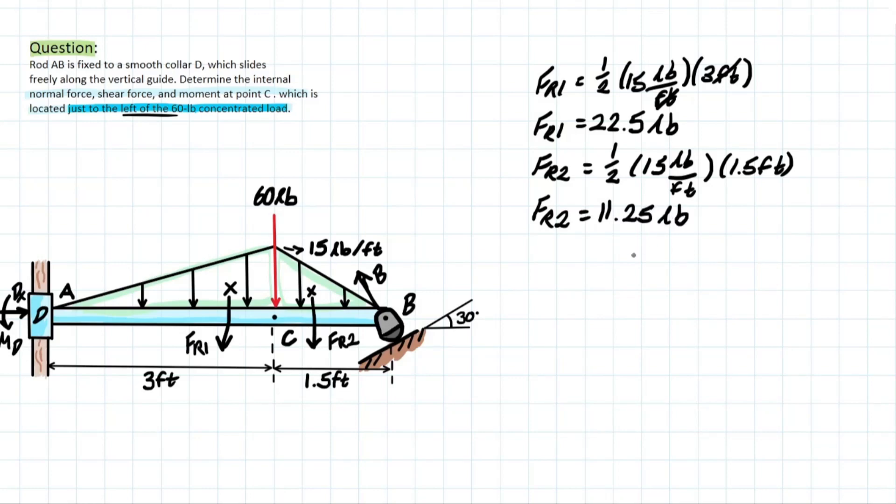Okay, so now that we have that, we can either solve for the reactions at D or the reactions at B. But I'm going to start with the reactions at B first, and I'm going to show you why shortly. So let's see what is actually happening when we analyze this rocker a little closer.